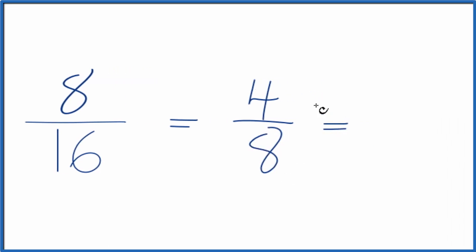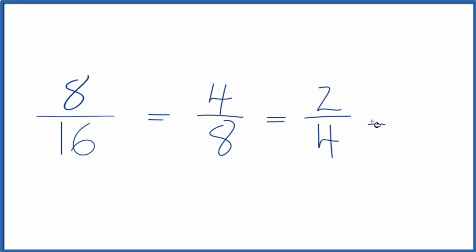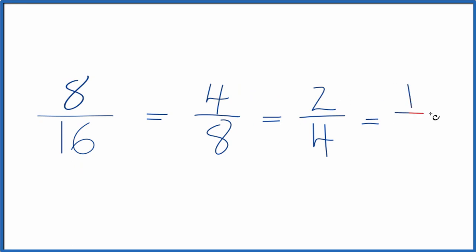We can simplify this again because 4 divided by 2, that's 2. 8 divided by 2 is 4. We can actually do this one more time. 2 divided by 2 is 1. 4 divided by 2 is 2.